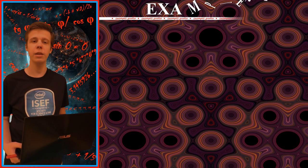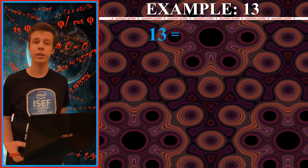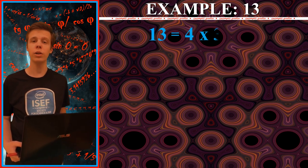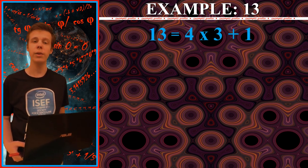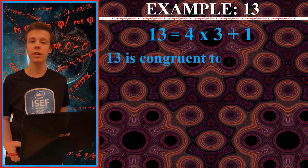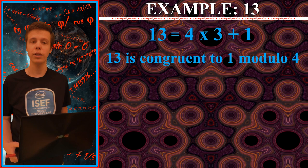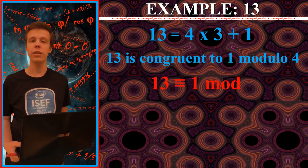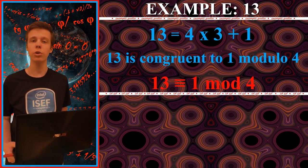Let's take any prime number, for example 13. 13 is equal to 4 times 3 plus 1. If we divide it by 4, we get 3 as an integer part of the division, and 1 is the residue. Mathematicians typically say in this case that 13 is congruent to 1 modulo 4.